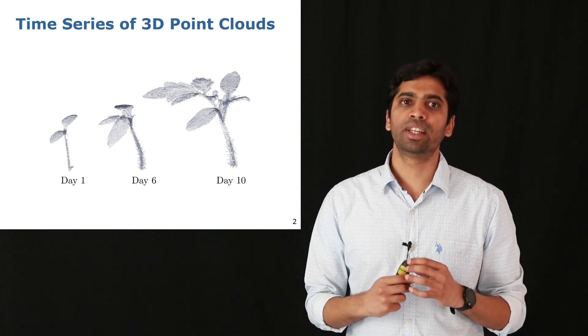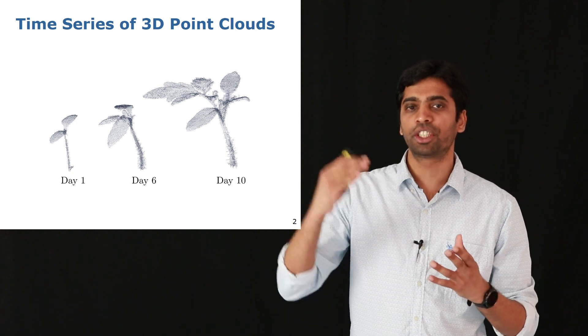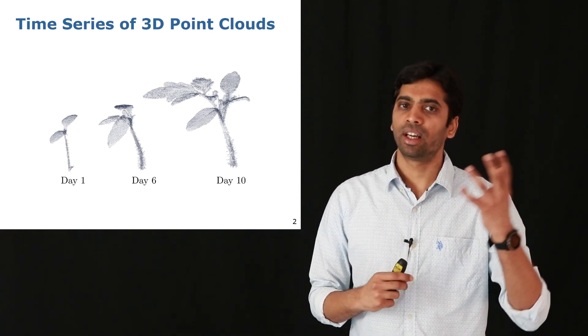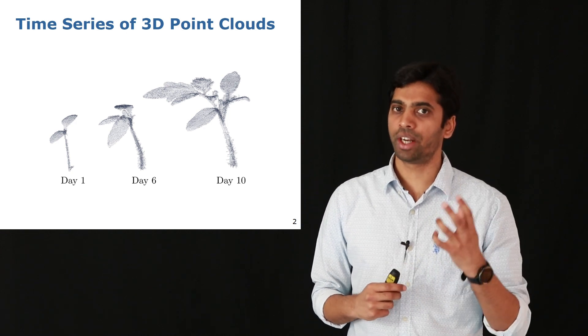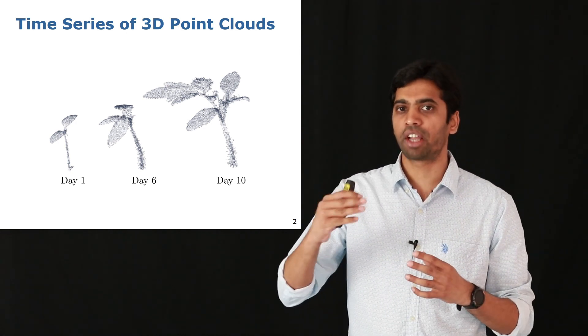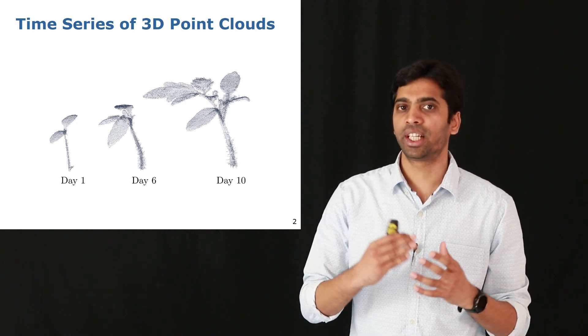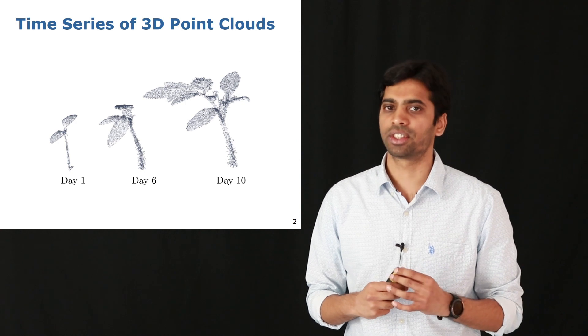So the problem here is registering point clouds which have been acquired at different times. As we can see in the image, we show three point clouds of a tomato plant taken roughly five days apart, and visually we see there's a large change in the appearance of these plants.